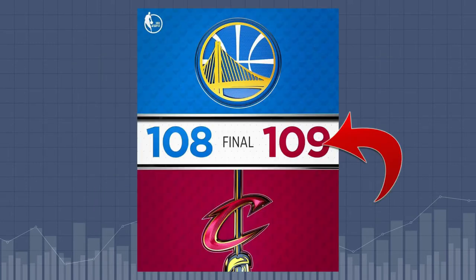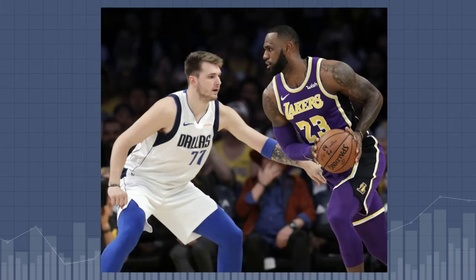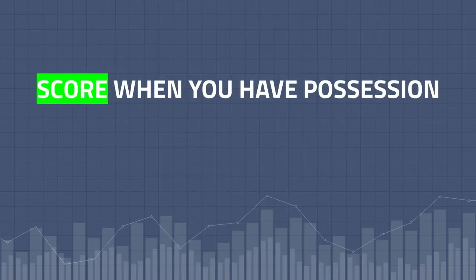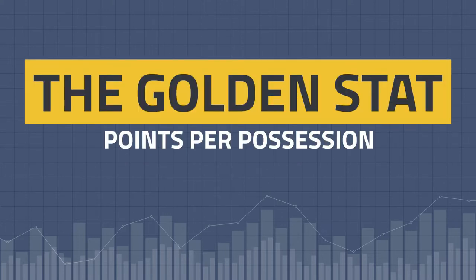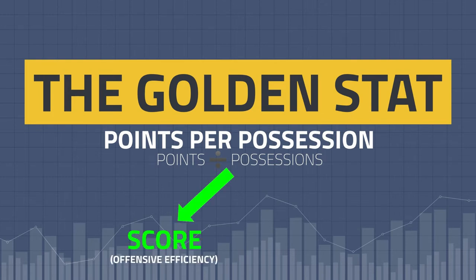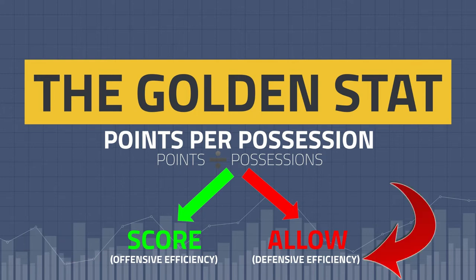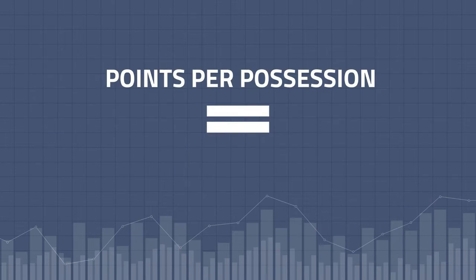Let's think about it. Obviously, the objective of the game is to score more points than your opponent. But let's go deeper than that. At any given moment of the game, what do you want to do? When your team has possession of the ball, you want to score, and you want to defend when your opponent has possession. Pay attention to the word possession. If these are the goals of the game, then the golden stat would be points per possession, which is simply the amount of points scored divided by the amount of possessions a team had. We measure how many points a team scores per possession and how many points a team allows their opponent to score per possession. This is known as offensive and defensive efficiency. It's important to remember that another word for points per possession is efficiency.